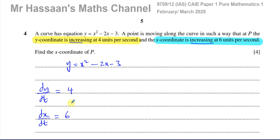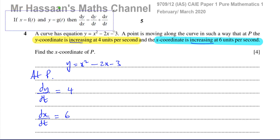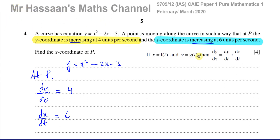How can we use this to find the x coordinate at P? We know these rates are true at point P. We can use the chain rule to find an expression for dy/dx in terms of these values, and actually find a value for dy/dx. We know dy/dt and dx/dt, and that will help us find the x coordinate of P. In fact, the formula book gives you this: if x and y are both functions of time, then dy/dx equals dy/dt divided by dx/dt.